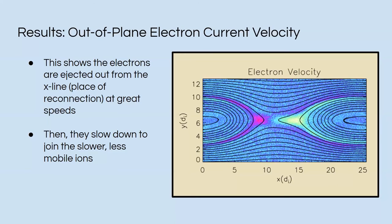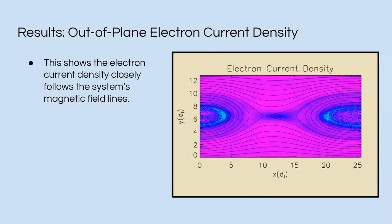Here we can see the out-of-plane electron current velocity, which is what we want to see. We want to see the electrons being ejected out of the x-line, which is where they reconnect at great speeds, and that they slow down. Here is the electron current density, which is also good news because it shows that it follows the system's magnetic lines.